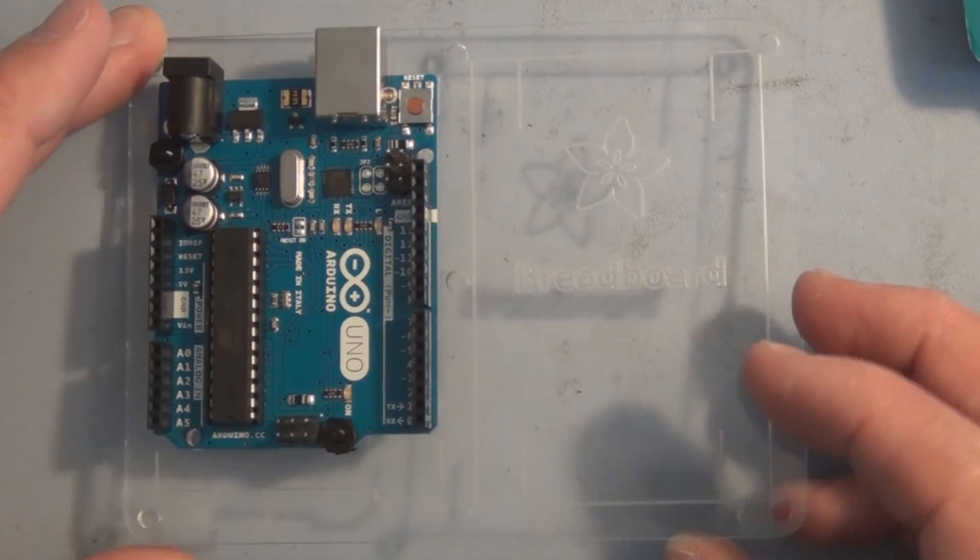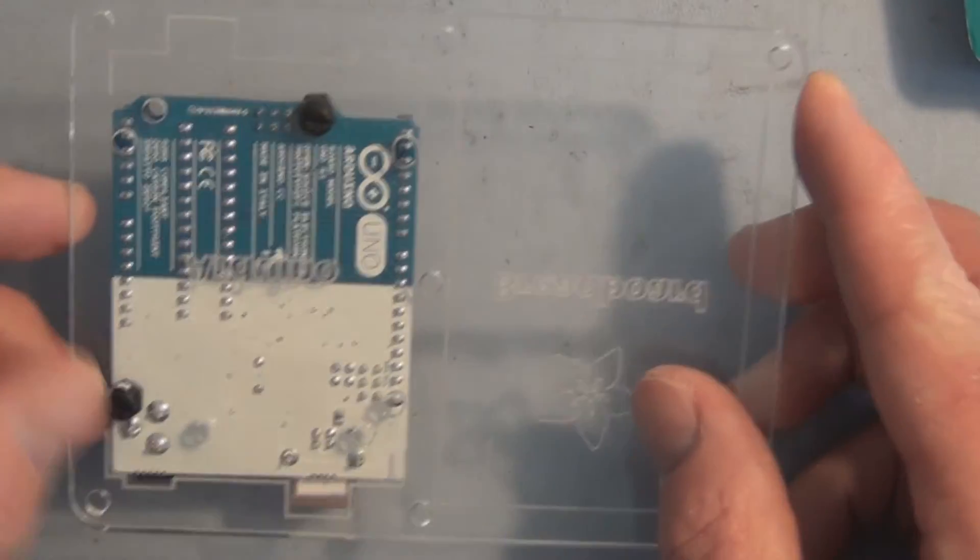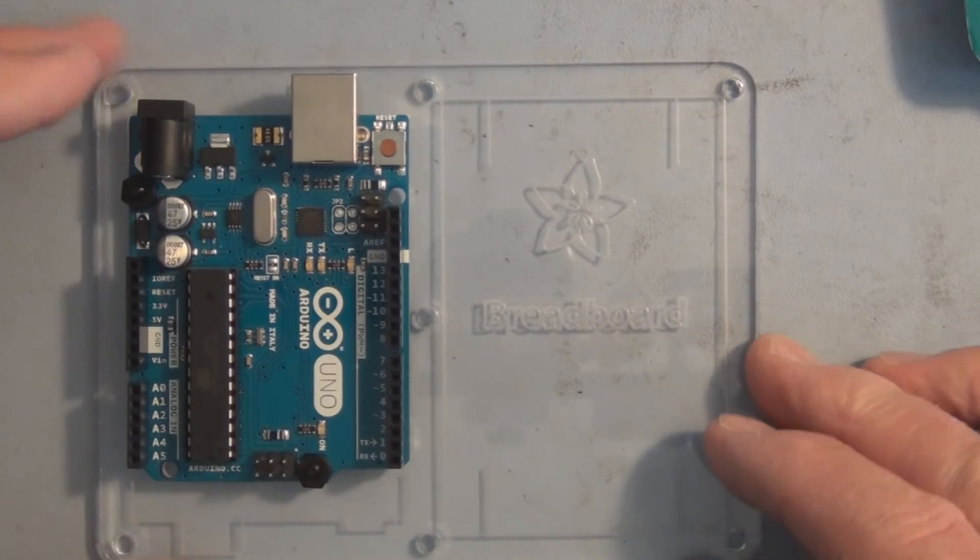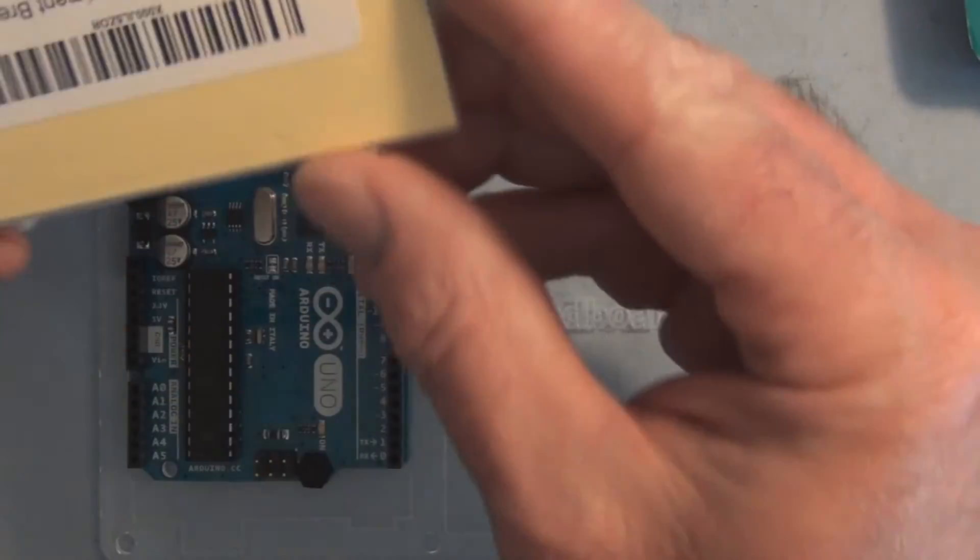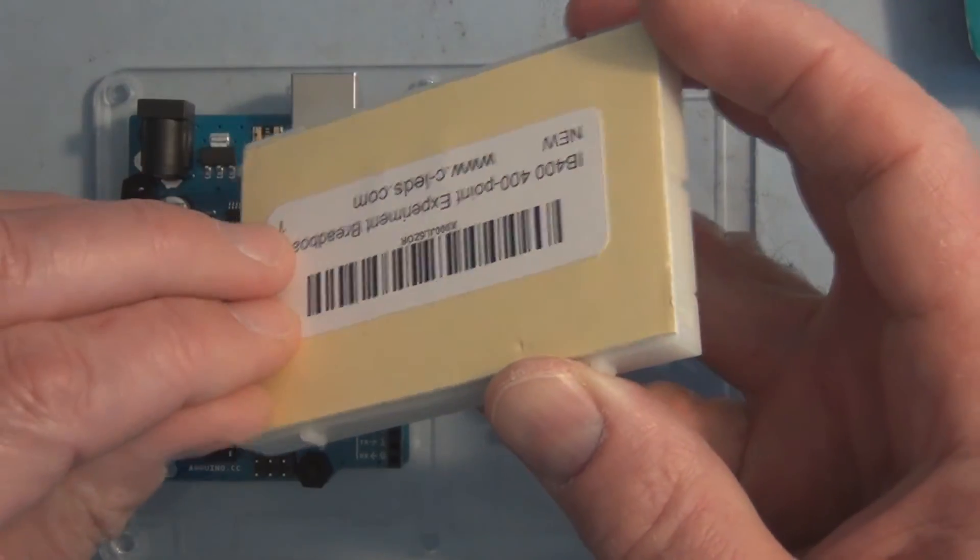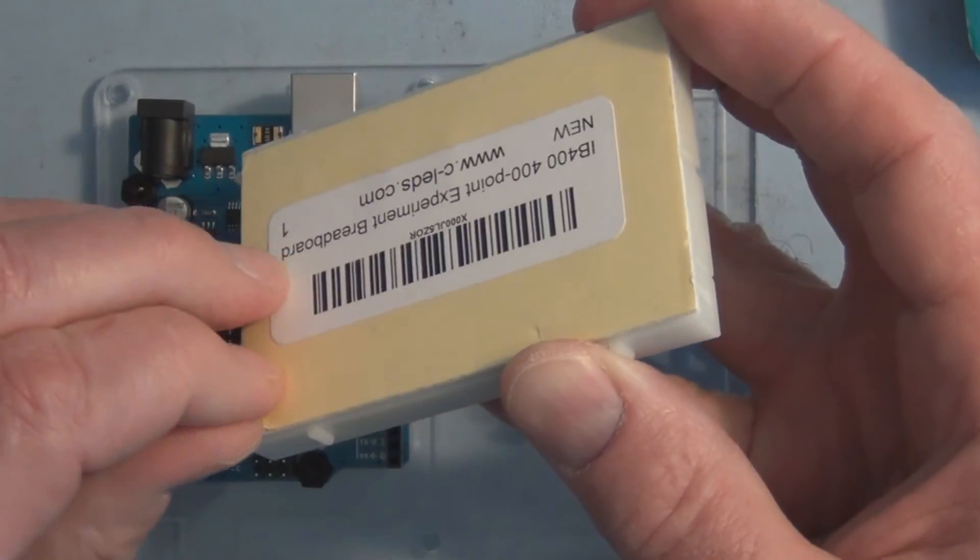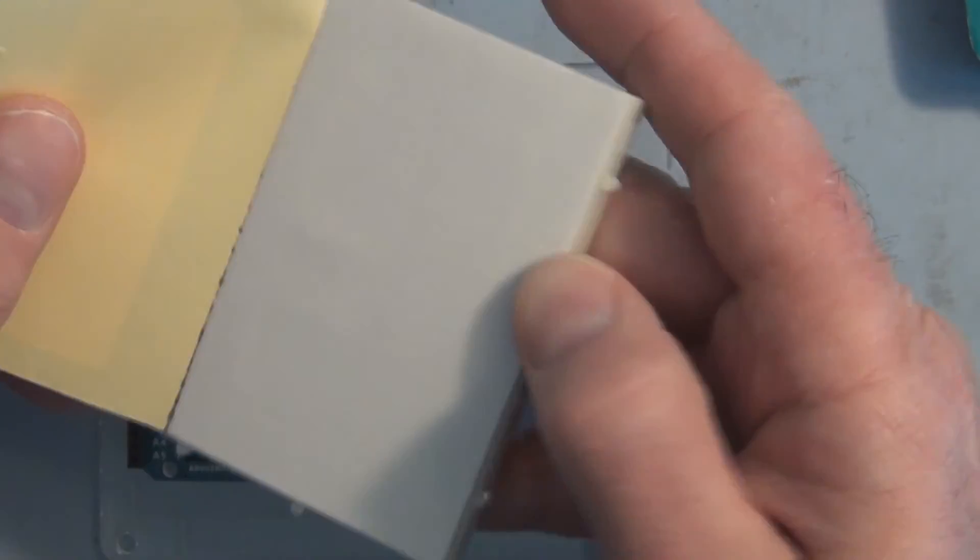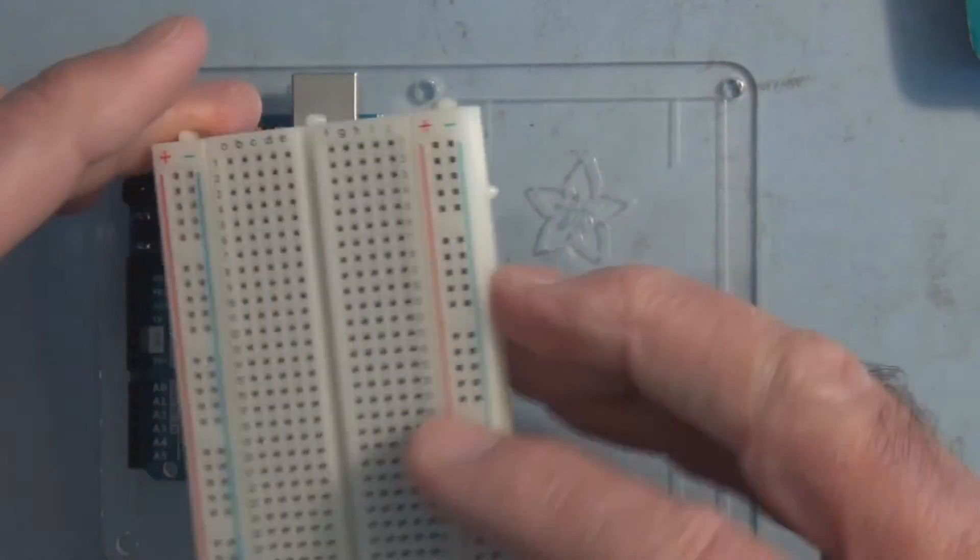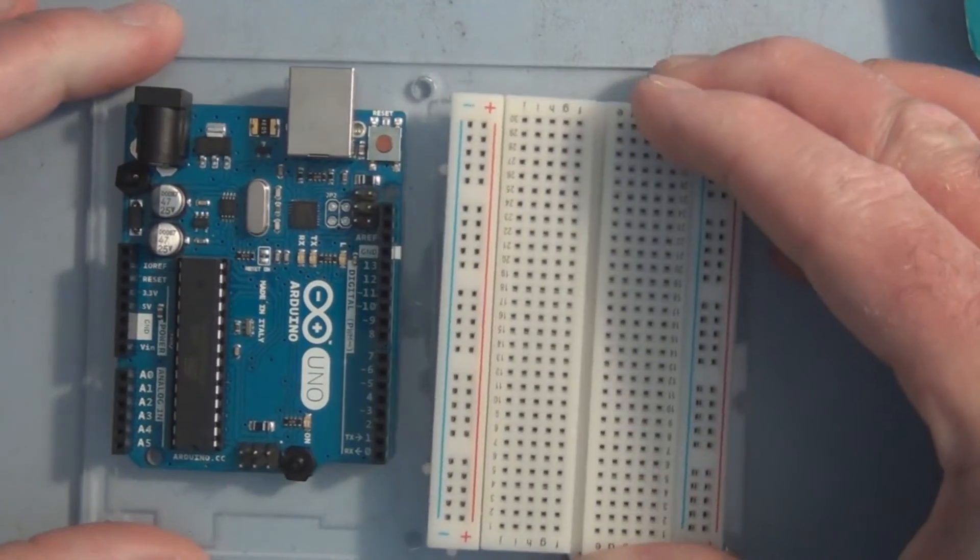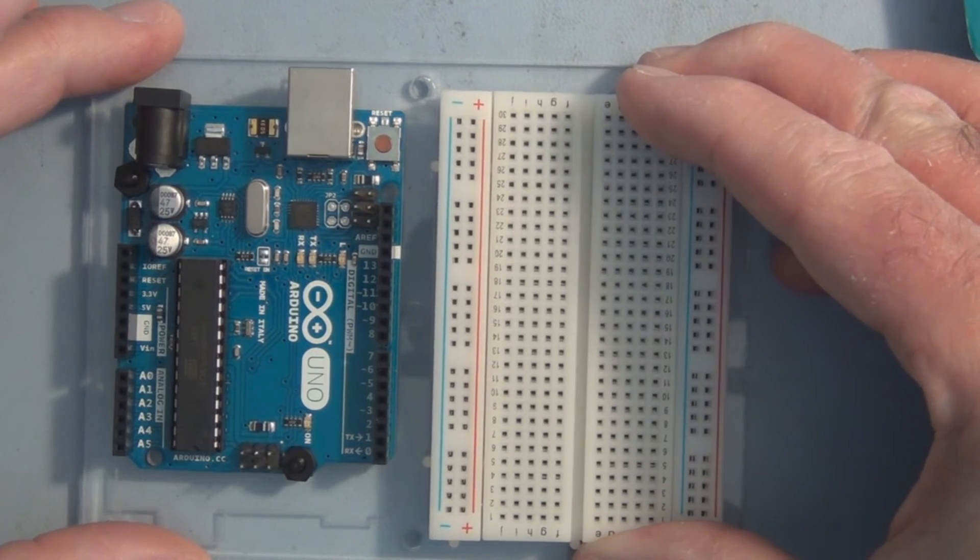I have the Arduino connected to the mounting plate. This has double-sided sticky tape—you just peel it off. On the breadboard, you peel this off and press it on.